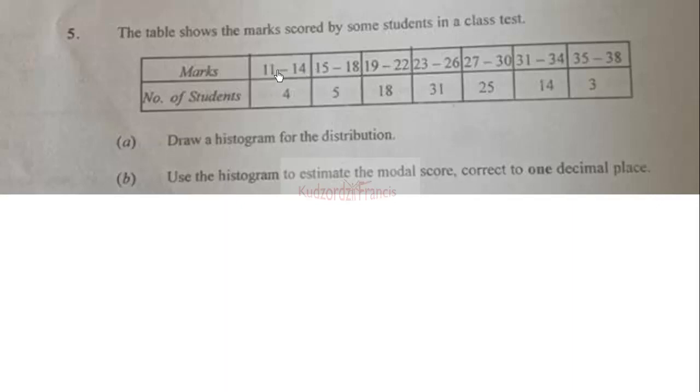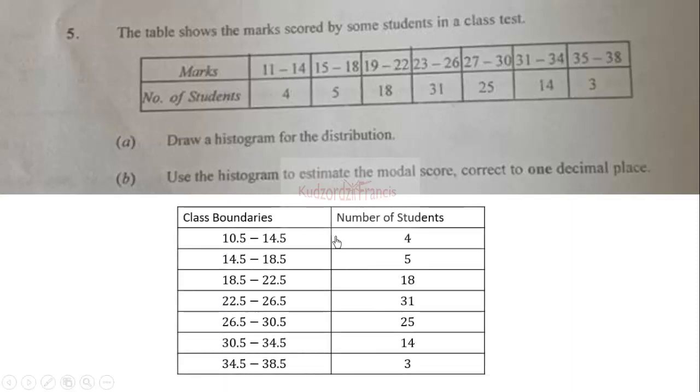We can create it from the class limits. These are the limits given to us. So we subtract 0.5 from all the lower limits and add 0.5 to all the upper limits, and that will give us this table.